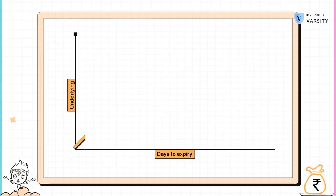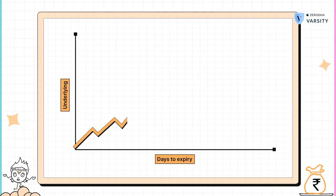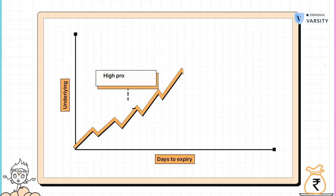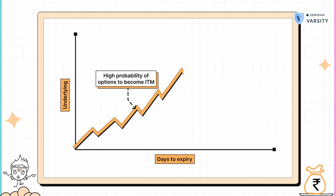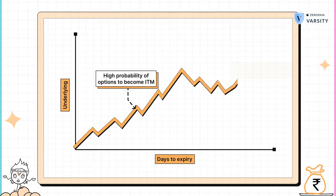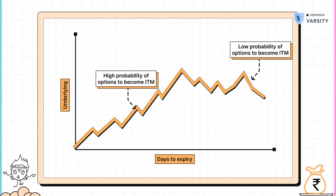Think about volatility as the speed at which a stock is travelling. Higher the speed, or higher the volatility, higher is the possibility that this option will expire in the money. Lower the volatility, or lower the speed at which the stock is travelling, then lower is the chance that this option will expire in the money.